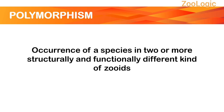But in Cnidarians, especially in class Hydrozoa, the species form a colony. These hydroid colonies have a single species possessing structurally and functionally different forms, and these forms are termed as zoids. These forms or individuals perform their specific function independently for the whole colony, and due to their assigned function, their structure is adapted accordingly. So we can define polymorphism as the occurrence of a species in two or more structurally and functionally different kinds of zoids.